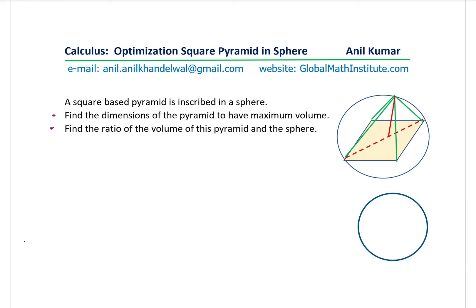Let's take the diagonal over here — that's the diagonal and the height along the center. Let me join these points so that becomes the square-based pyramid. Let's say the center of the sphere connects with one of these points; we get the radius r. Let's label the points as AB being the diagonal of the square-based pyramid, point O as the center, and P and Q as the points of the altitude.